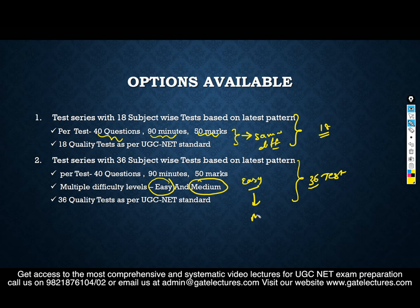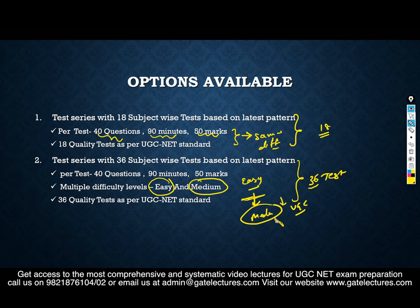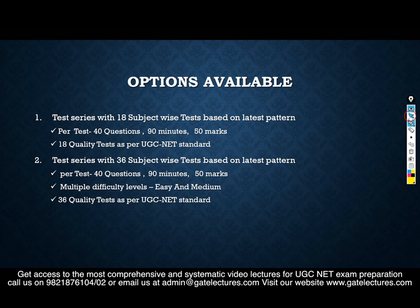In the 36-test package, you first attempt the easy level tests and then the medium level tests. The medium level test is slightly above the UGCnet standard — questions in the actual exam fall somewhere between easy and medium — so if you score well at the medium level, you will perform really well in the actual examination.